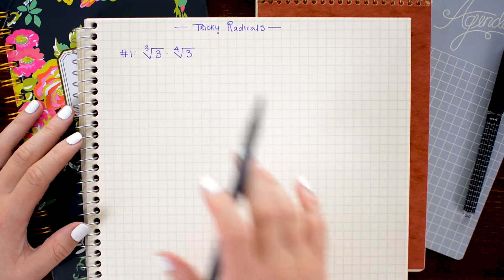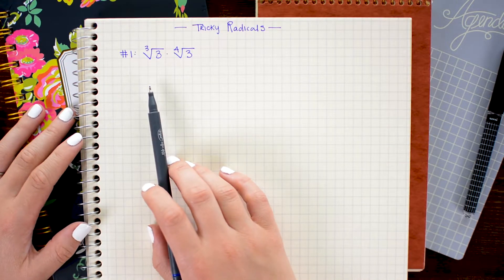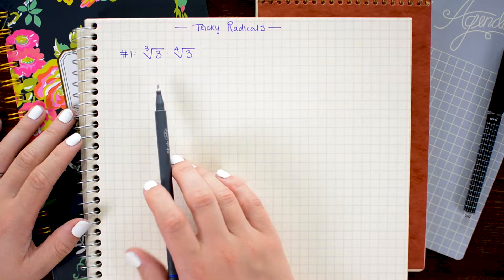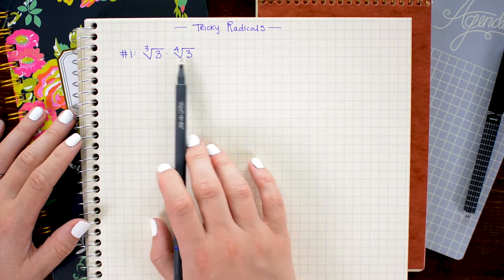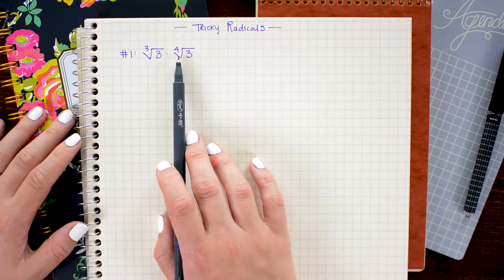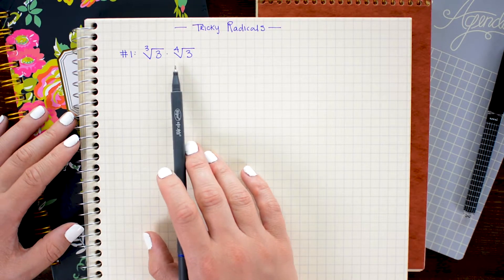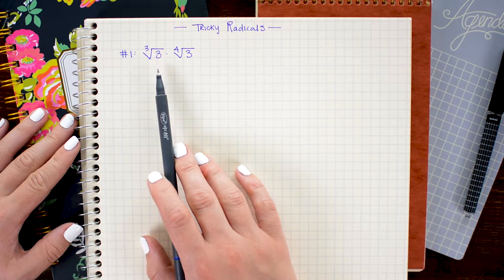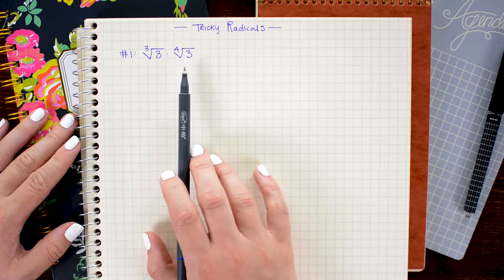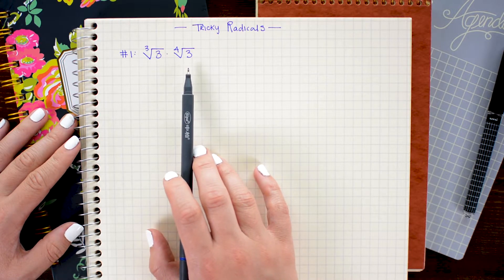One type of tricky radical you might run into is trying to multiply radicals together that have different indices. Now so long as those radicals have the same base, we can actually perform this operation. To do that, it might be helpful to change it out into that rational exponent form I've talked about before, and what that's gonna do is just make it a lot clearer how to proceed.